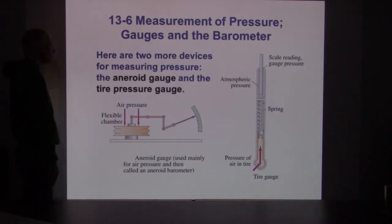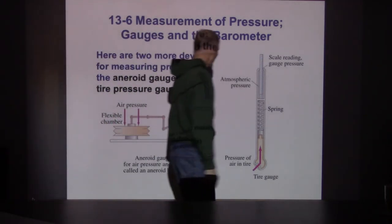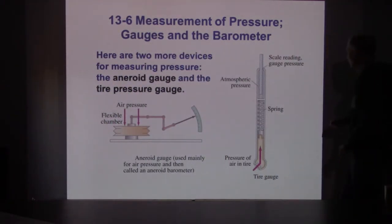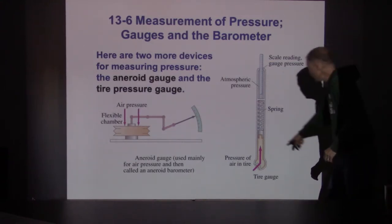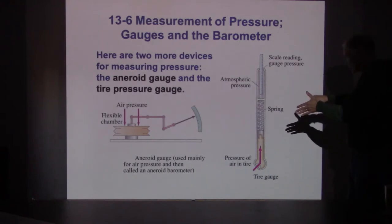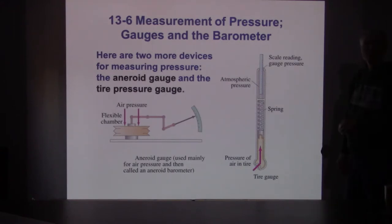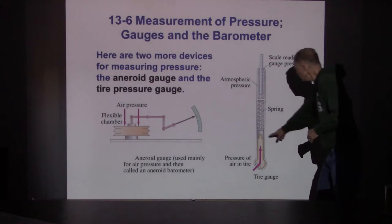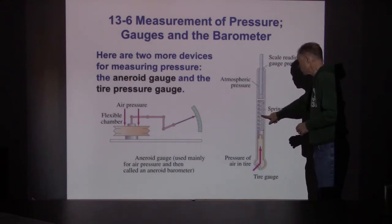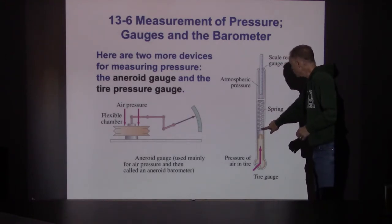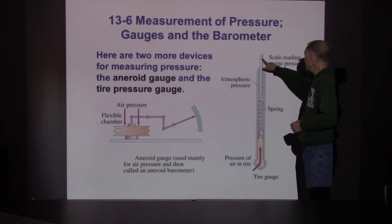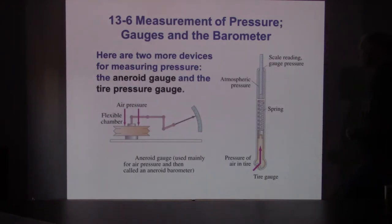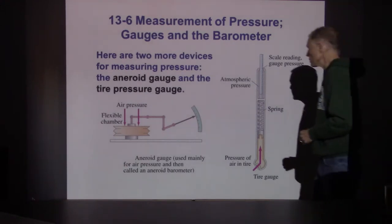Here are a couple of gauges. Here's my bicycle pressure gauge — I push the end into contact with the air inside the tire. It's just a mechanical system with a spring: more pressure pushes more forcefully, the spring compresses, and the gauge needle shoots out a bit, so we can tell what the pressure is.